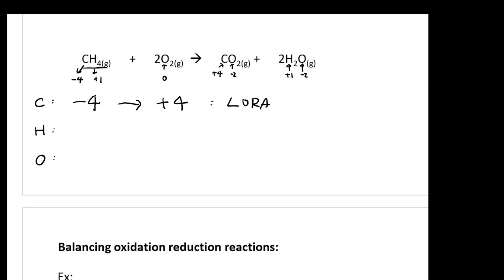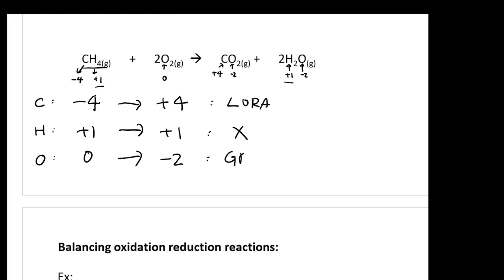Now let's look at the hydrogen. Before the reaction, the oxidation number of H is plus one. After the reaction it is still plus one. So hydrogen did not actually undergo any redox reaction. How about oxygen? Before the reaction it is zero; after the reaction it is negative two — it is gaining electrons. So oxygen is actually your GROC.